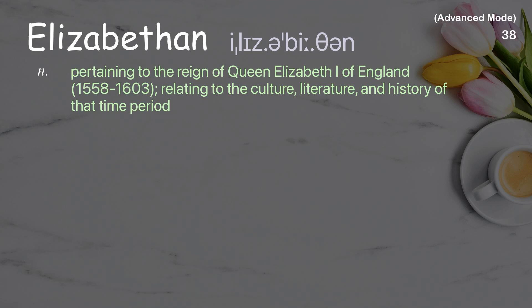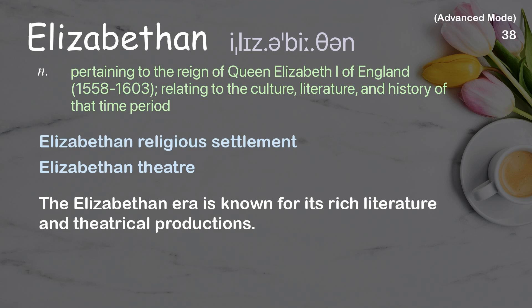Elizabethan. Pertaining to the reign of Queen Elizabeth I of England, 1558 to 1603, relating to the culture, literature, and history of that time period. Examples: Elizabethan religious settlement, Elizabethan theater. The Elizabethan era is known for its rich literature and theatrical productions.